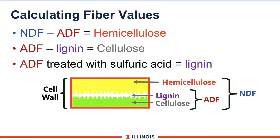To calculate fiber values, you can either analyze them chemically or you can do subtraction. If you subtract ADF from NDF, that's hemicellulose — the most digestible fraction of the cell wall itself. If you subtract lignin from ADF, that gives you cellulose. Lignin can be calculated or evaluated chemically. ADF can be treated with sulfuric acid, and the residual product would be lignin. So you can either chemically analyze these or do it by difference.